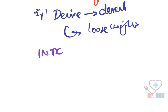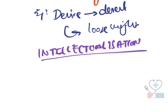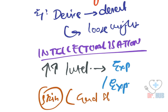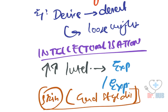Next we look at intellectualization. Intellectualization involves excessive use of intellectual processes to avoid affective expression or experience. An example is saying: 'It is very interesting to note the skin lesions which seem to arise as a consequence of my end-stage disease' — finding it intellectually interesting rather than emotionally responding.